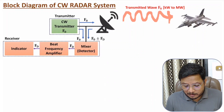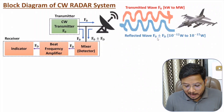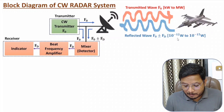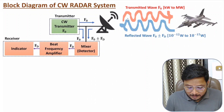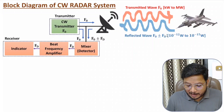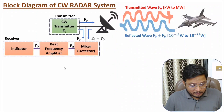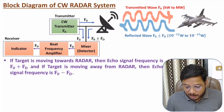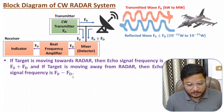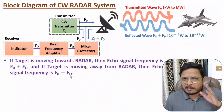If the target is in motion, the reflected signal will have a frequency deviation. The reflected signal has frequency F0 plus or minus Fd, and it is very weak in power — in terms of 10 to the power minus 12 volts to 10 to the power minus 15 volts. There will be a frequency drift based on the motion of the target: if the target is going towards the radar, the frequency is F0 plus Fd; if moving away, it is F0 minus Fd.